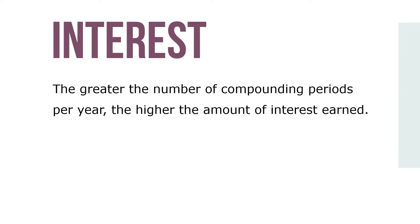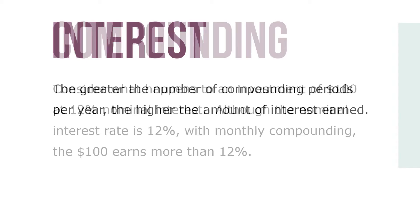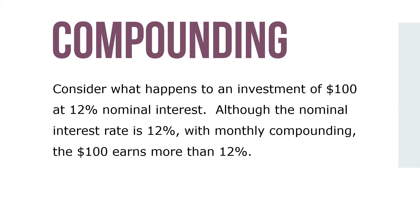The greater the number of compounding periods per year, the higher the amount of interest earned. Consider what happens to an investment of $100 at 12% nominal interest. Although the nominal interest rate is 12%, with monthly compounding, the $100 earns more than 12%. This is why many investment officers today advise daily or continuous compounding.